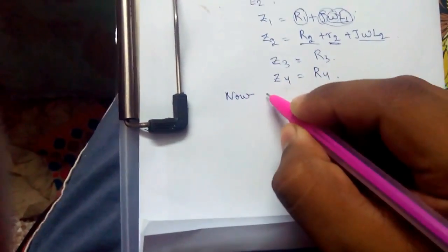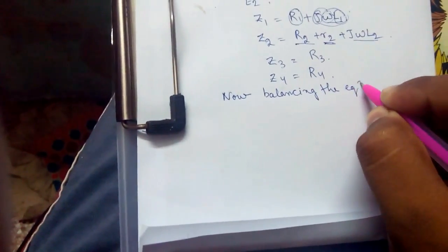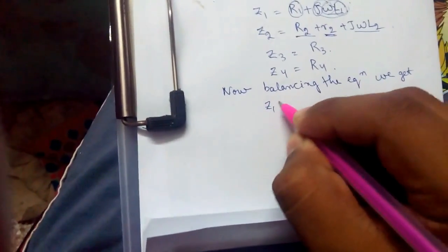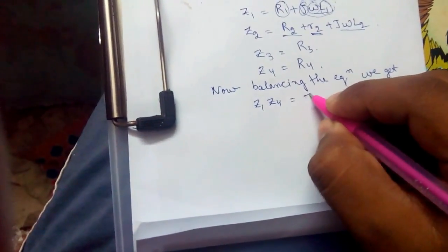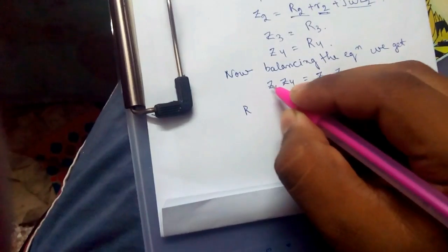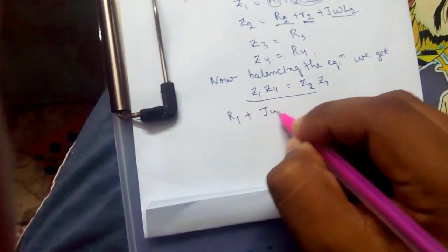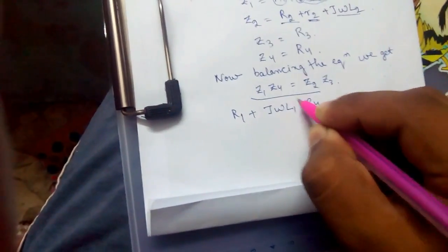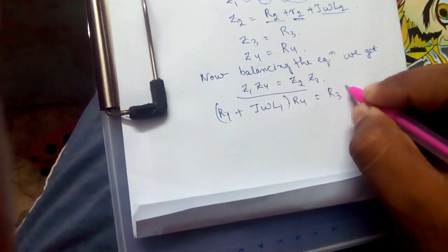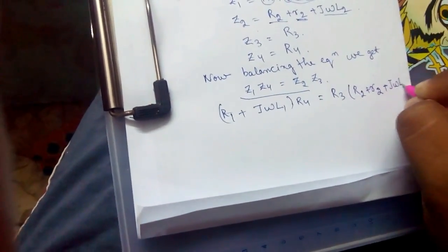Now, balancing the equation. We get Z1 times Z4 equals Z2 times Z3. That is, putting the values of Z1 and Z2 in this equation: R1 plus j omega L1 times R4 equals R3 times R2 plus small r2 plus j omega L2.